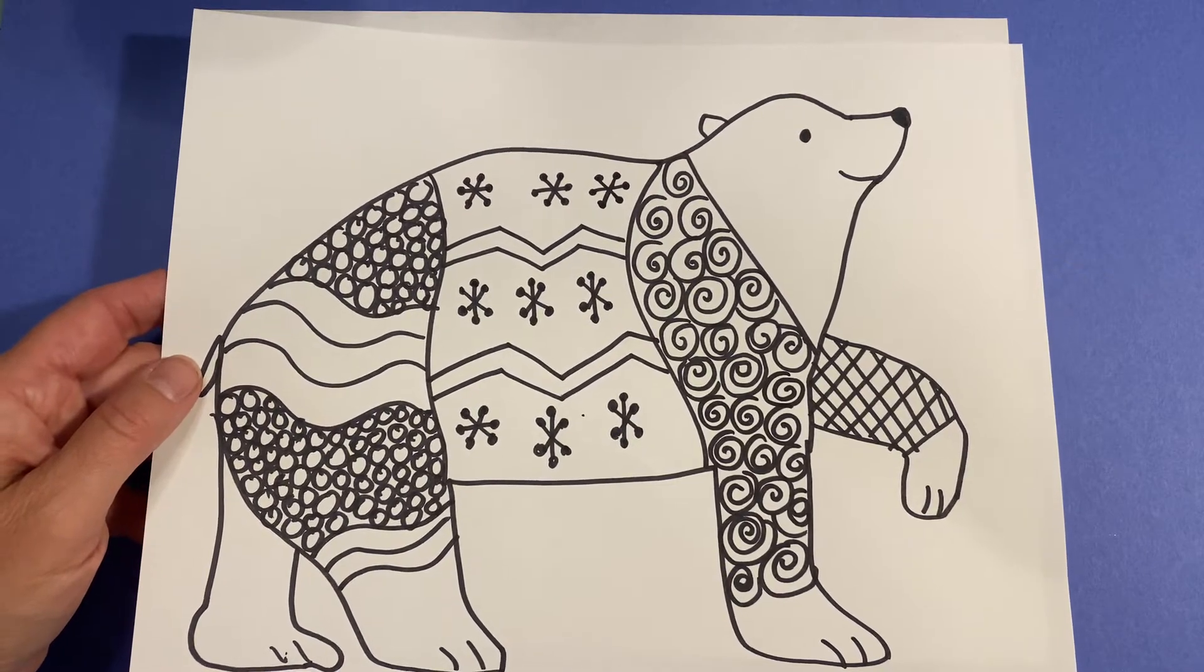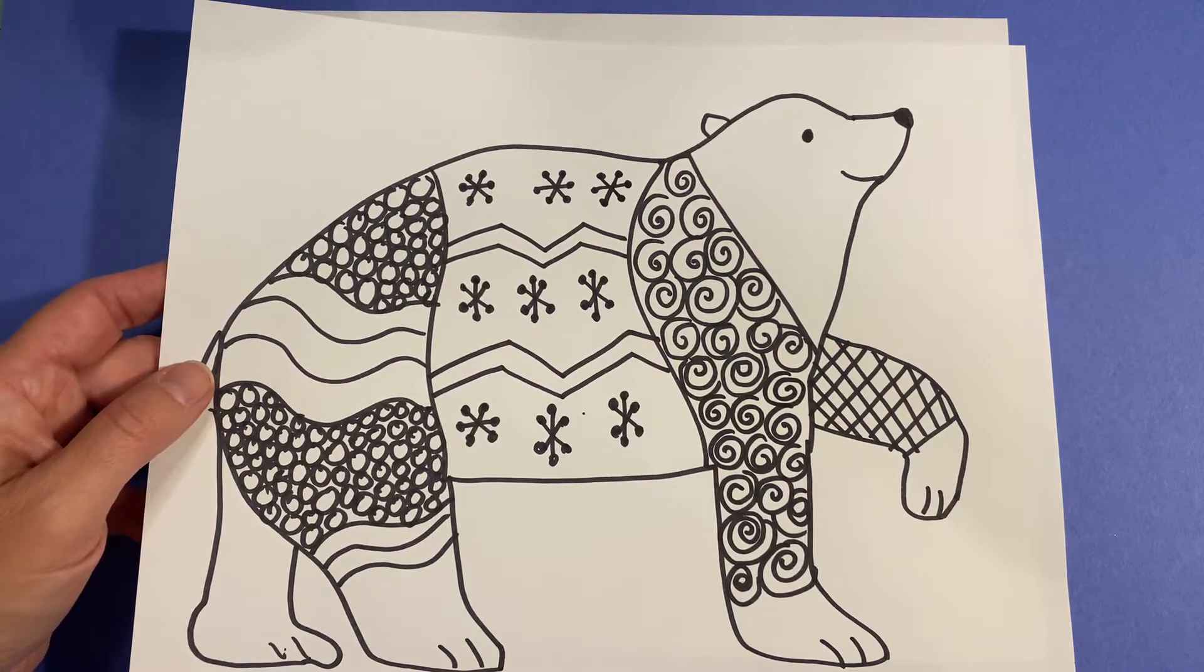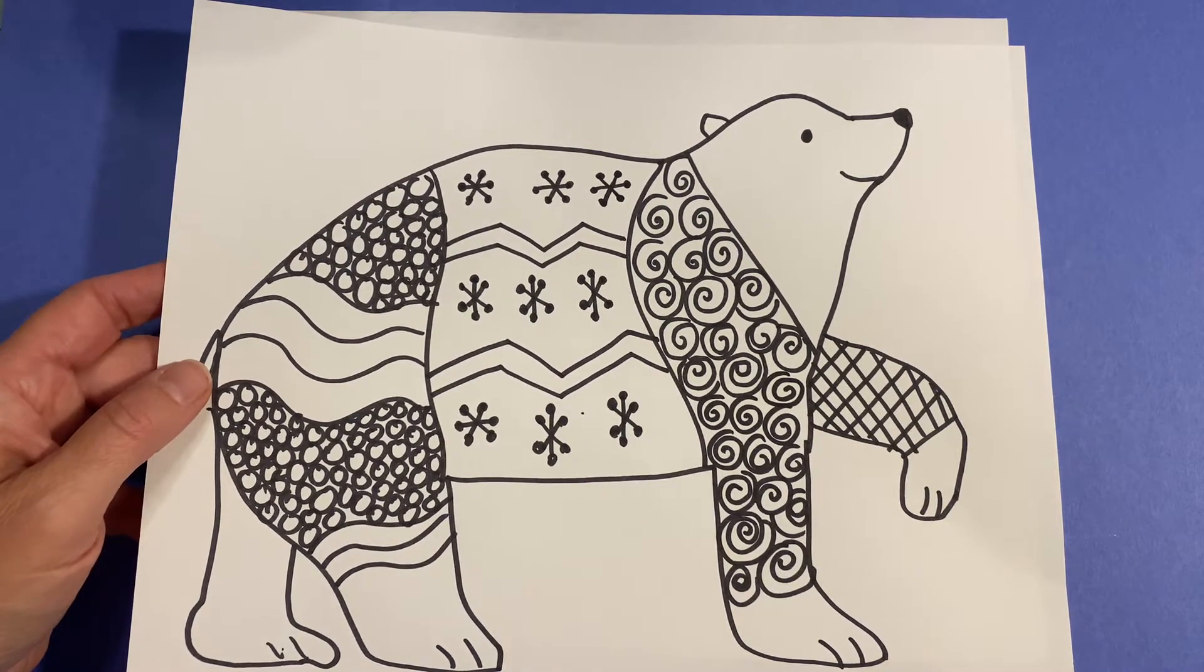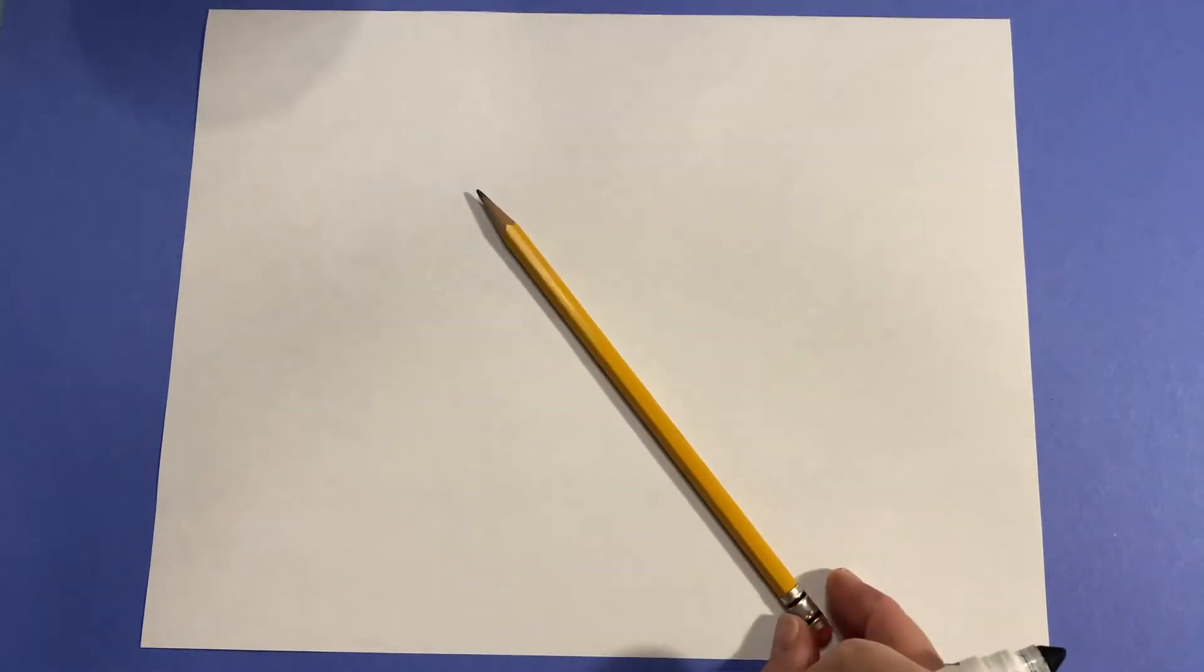Hello my fourth and fifth grade students. Today we're going to be taking what we already know about line designs and patterns and creating a bear. You'll need a white piece of paper, a black marker if you don't have one at home you could just use a simple pencil, and let's get started.